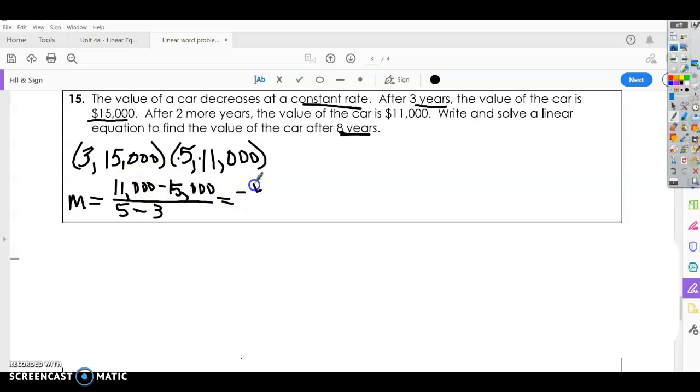Alright, 11 minus 15,000 is negative 4,000, 5 minus 3 is 2. Divide that and negative $2,000. So that's our slope. Basically, that says that our car is depreciating at a constant rate of $2,000 per year. They don't necessarily depreciate at a constant rate, but they definitely depreciate faster than we like.